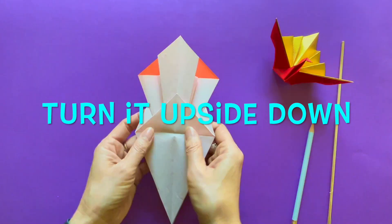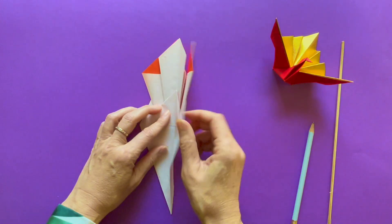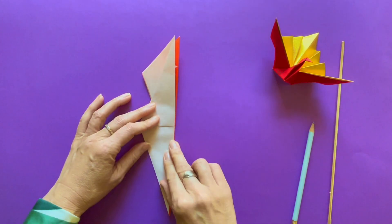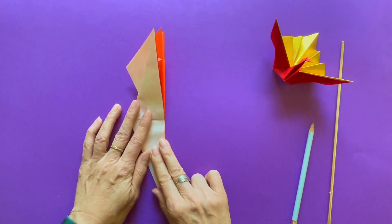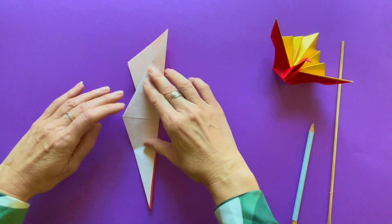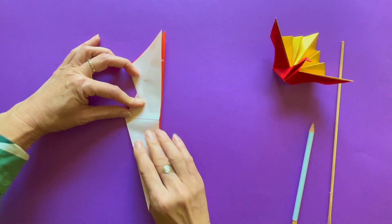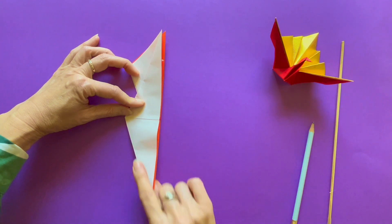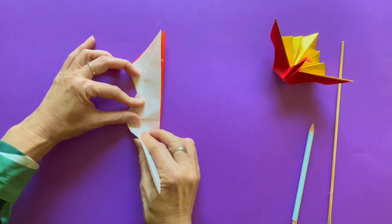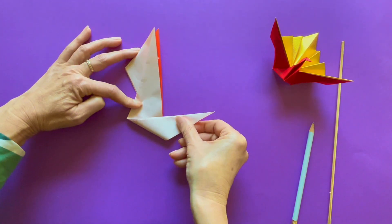For the next step, simply turn it upside down. Very simply upside down. And from the right edge to the left, you fold. From the bottom, that's the next one. From the bottom, you will fold to L.